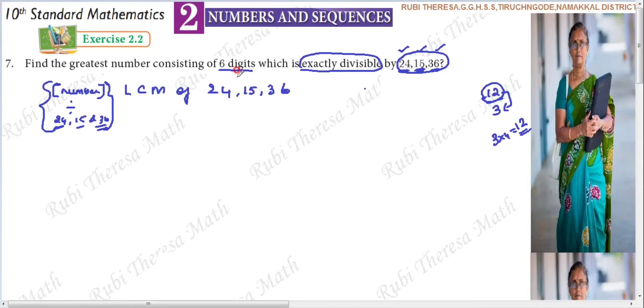Using prime factorization via the Fundamental Theorem of Arithmetic, or we will go to the usual method. The usual method is the L-division method, where we take all 3 numbers together.